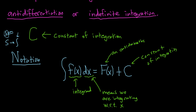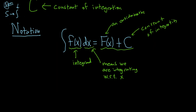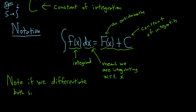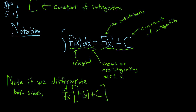When we add C to big F, we get the general antiderivative — this whole thing is the general antiderivative. Notice: if we differentiate both sides, d/dx of big F of x plus C equals the derivative of big F, and the derivative of C is zero since C is a constant. Since big F is an antiderivative for little f, this equals little f. So you can always check your answer by taking the derivative.